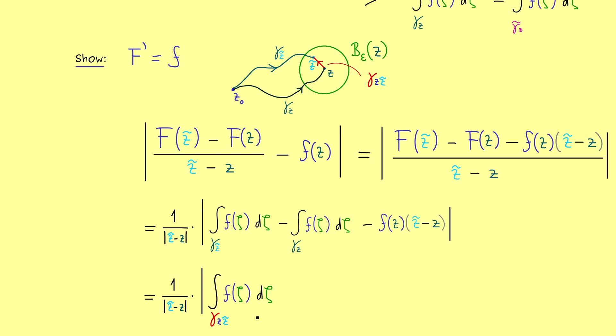Okay, and now our next idea should be that we also rewrite this third term here as a contour integral along gamma_z_z_tilde. Indeed, this is no problem at all, when we say that this curve here, our curve gamma_z_z_tilde is just the line. Because then, we know that the contour integral along the constant function 1 is just z tilde minus z. So we know in general it's just the end point minus the starting point.